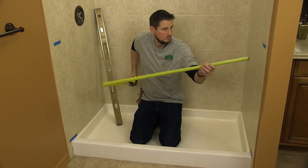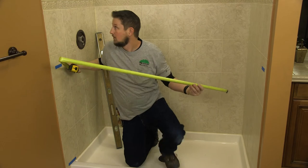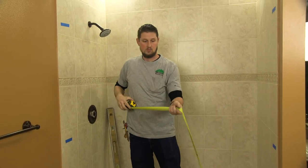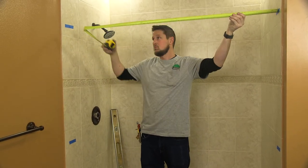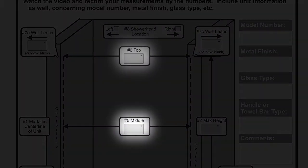Measure the width of the enclosure at the middle and top paint strips. Note this in boxes 5 and 6 of the measuring sheet.